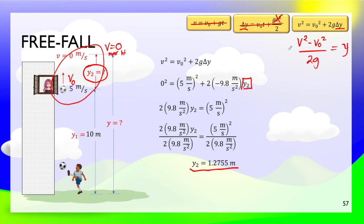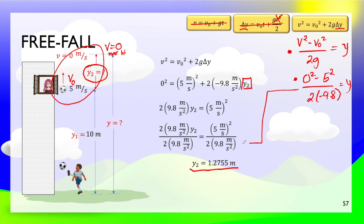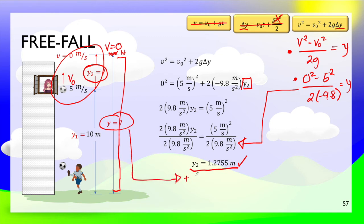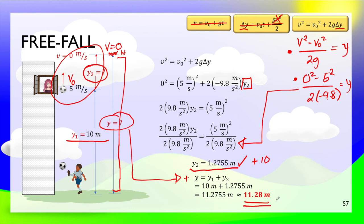Substituting: 0 squared minus 5 squared divided by 2 times negative 9.8, we get Y2 equals 1.28 meters. But that is not yet the final answer because the problem asks how high above the ground. So we add the 10 meters from the ground to the window, giving a total height of 11.28 meters above the ground.